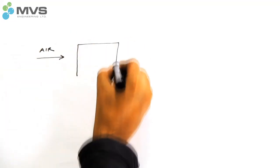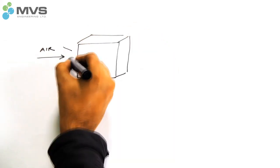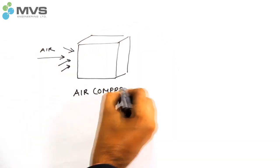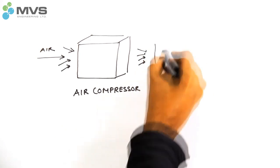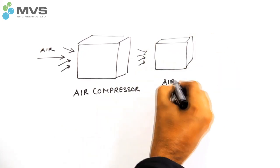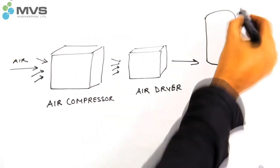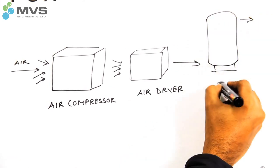In an on-site nitrogen generator, the atmospheric air is compressed using an air compressor. This air is compressed and made moisture-free using an air dryer. The dry air is collected in an air receiver tank.